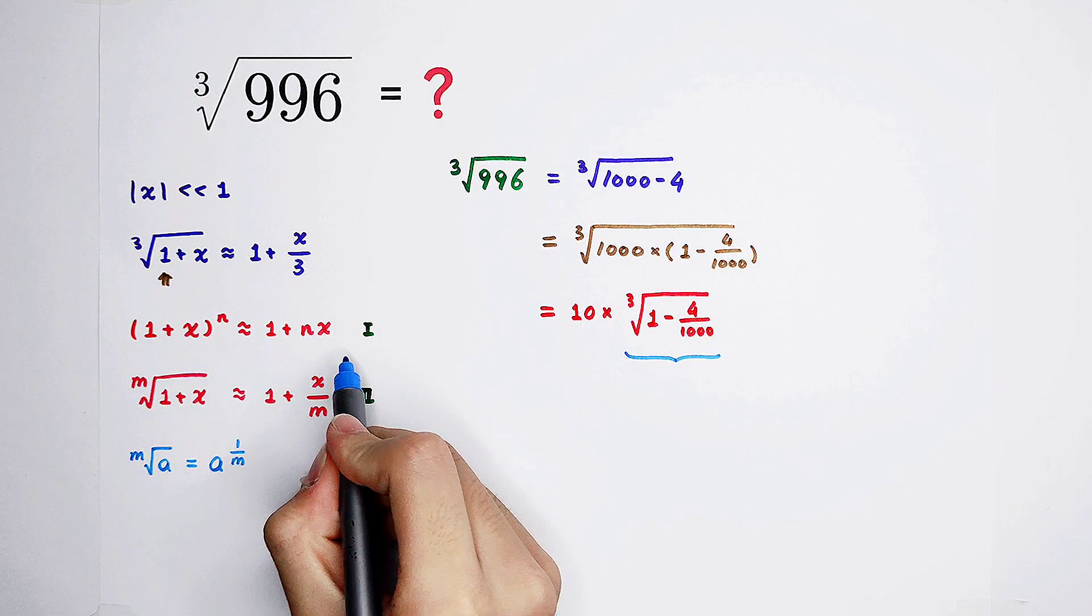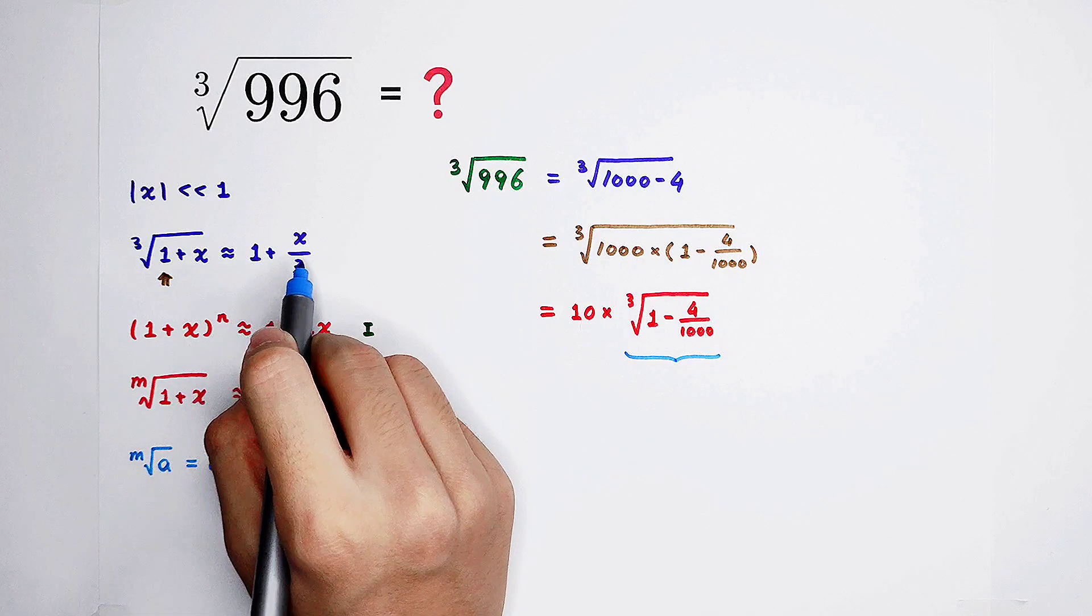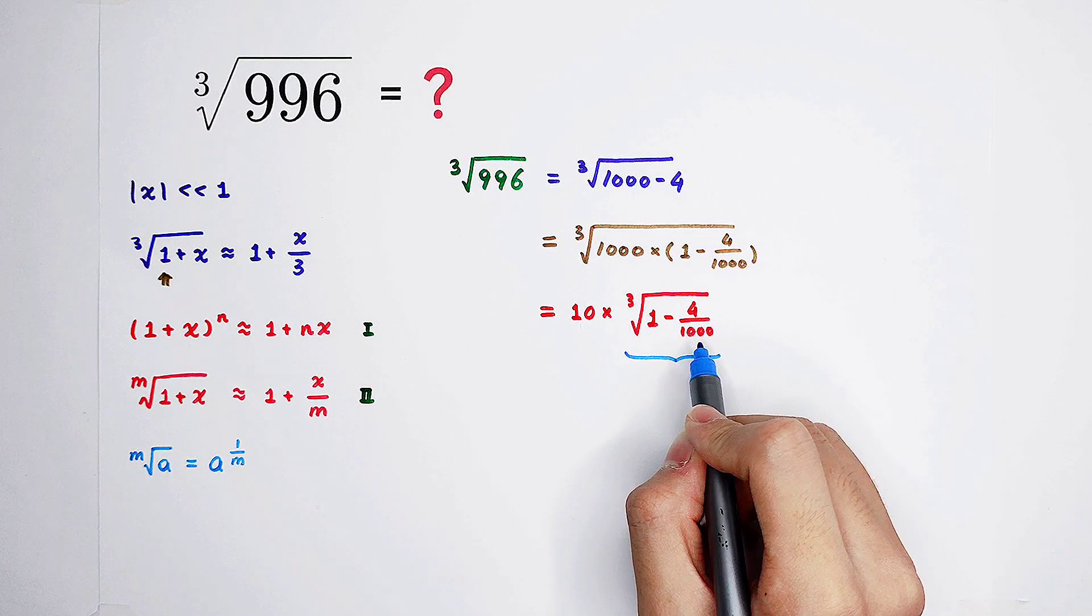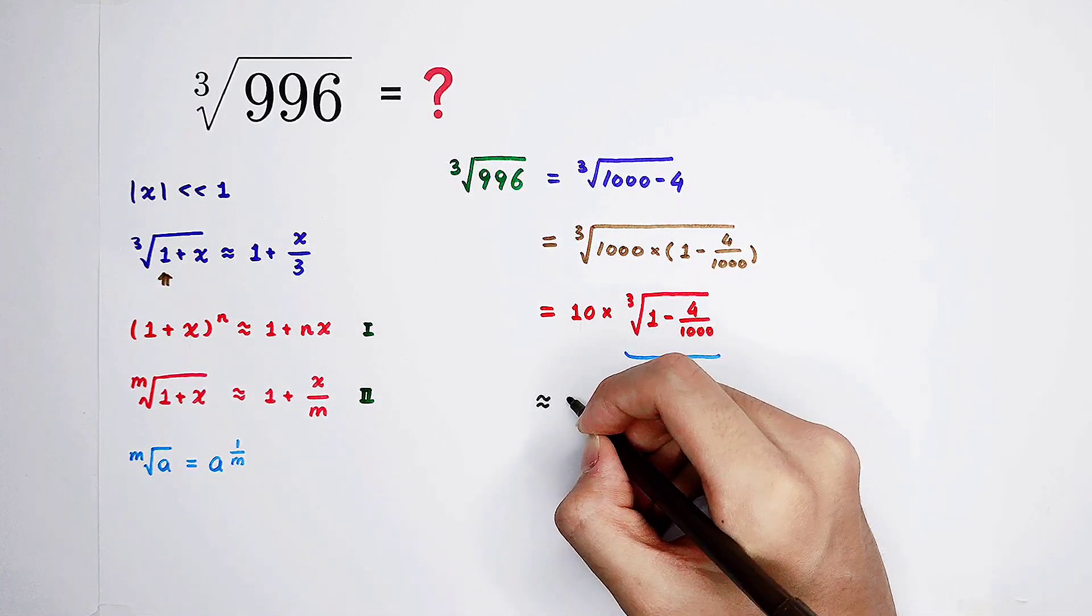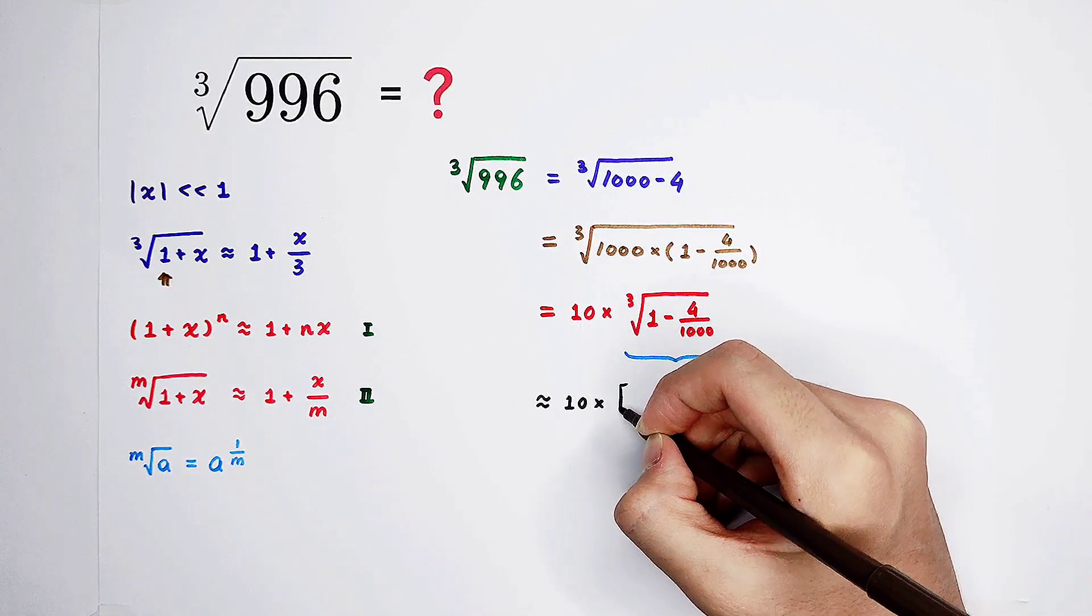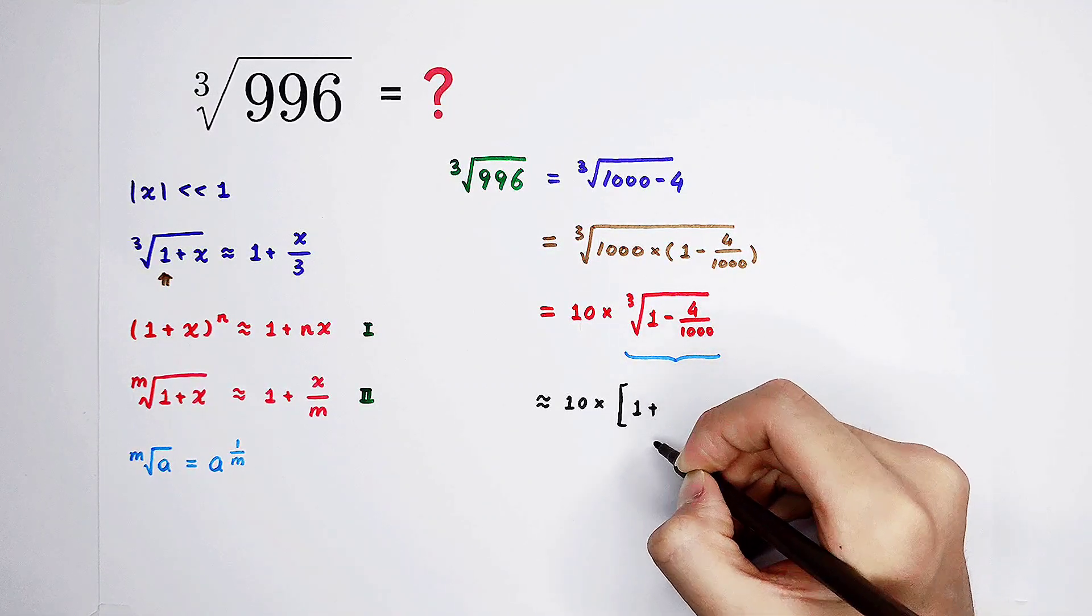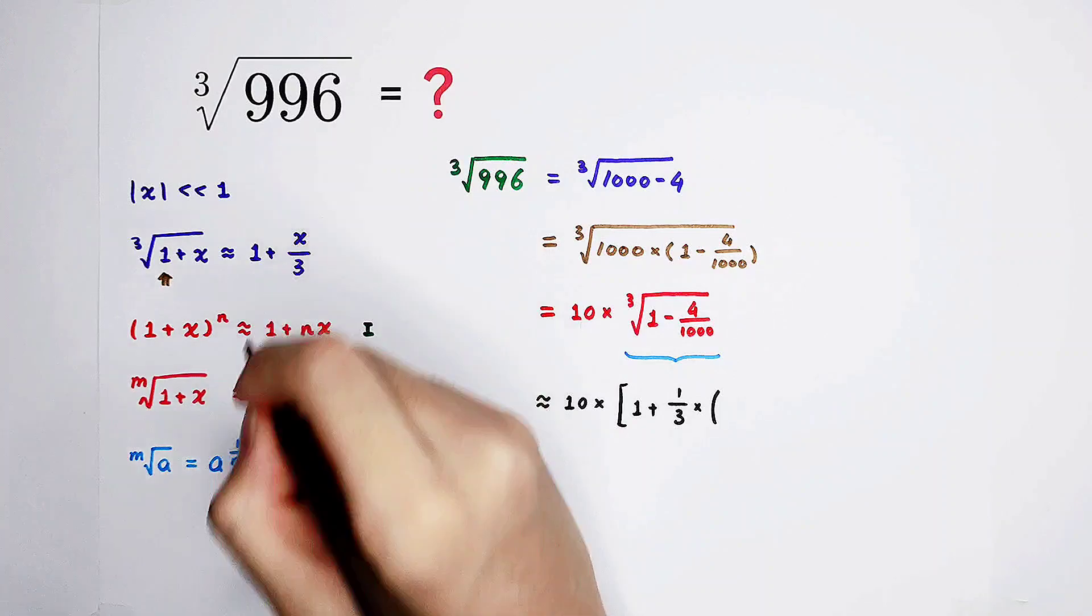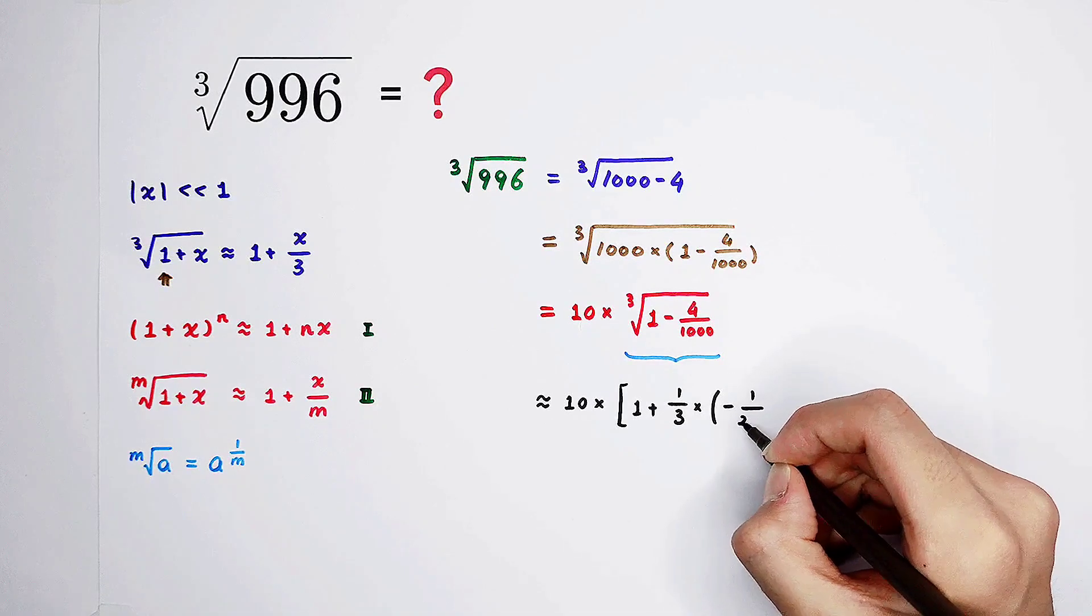How should I do it? Formula. The third root of 1 plus x is approximately equal to 1 plus x over 3. In this case, x is negative 4 over 1,000. Not positive, remember that. Negative. So, it is approximately equal to 10 times 1 plus 1 over 3 times x. Negative 4 over 1,000 is 1 over 250.